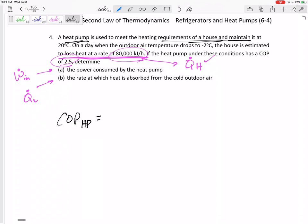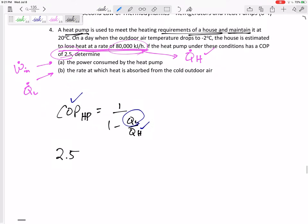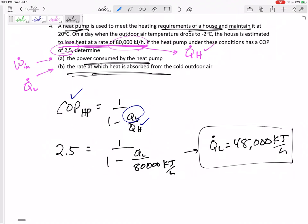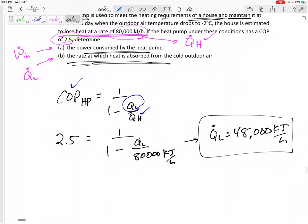But I know the coefficient of performance is one over one minus Q_L over Q_H. So if I know coefficient of performance and I know the Q_H, I can find the Q_L. This is 2.5, one over one minus Q_L over 80,000 kilojoules per hour. Maybe I could change that to kilowatts, but if I don't change anything, then I'm going to be left with a Q_L of 48,000 kilojoules per hour. It didn't tell me what units it wanted, so I'll just leave it as kilojoules per hour.